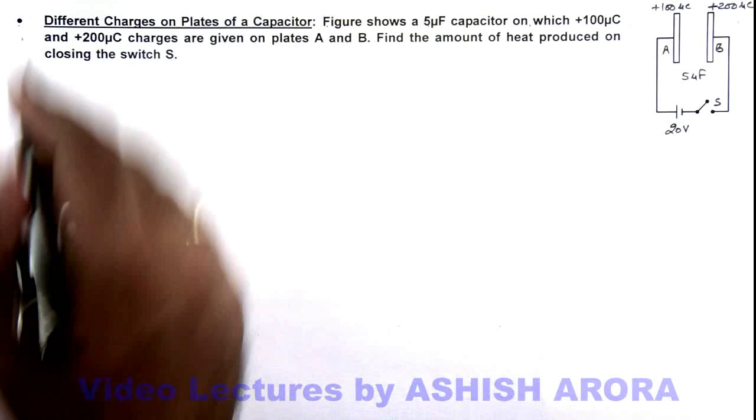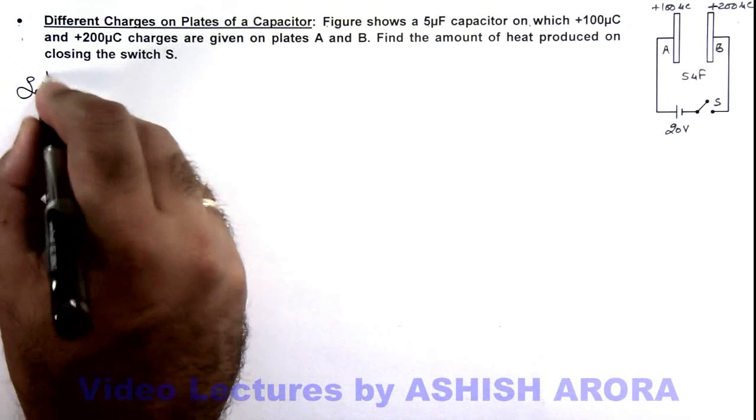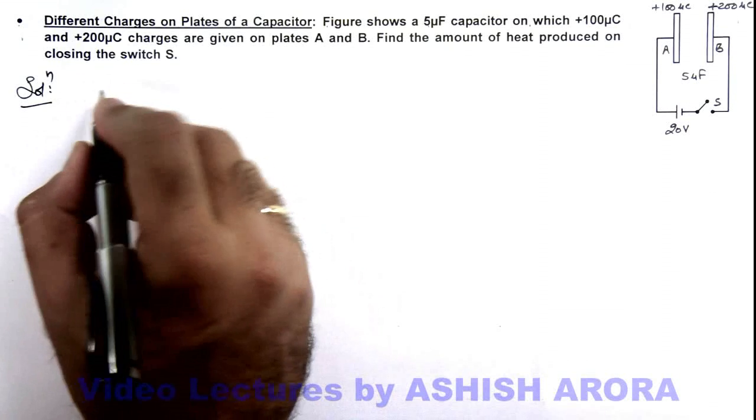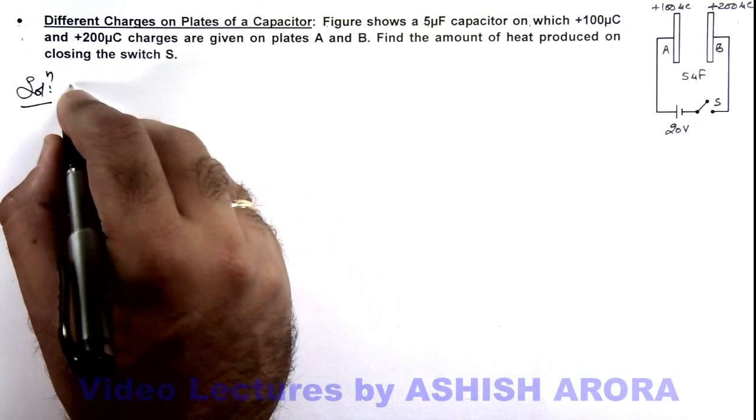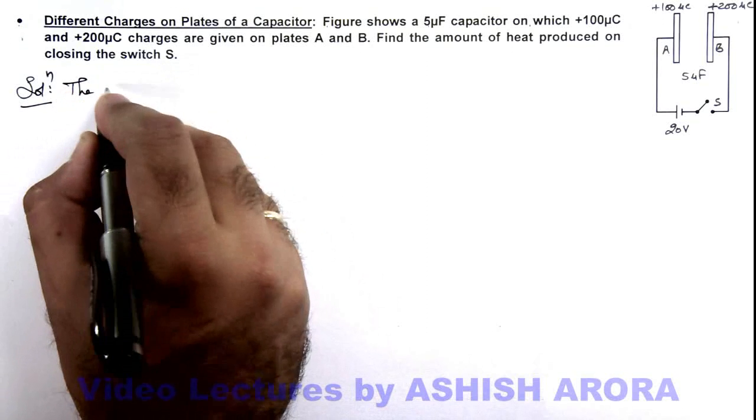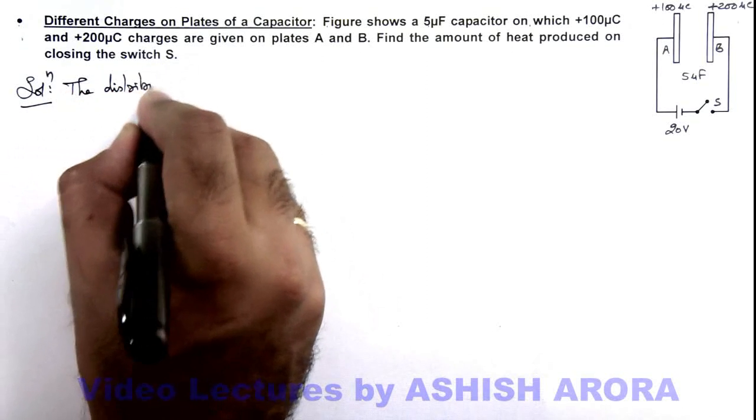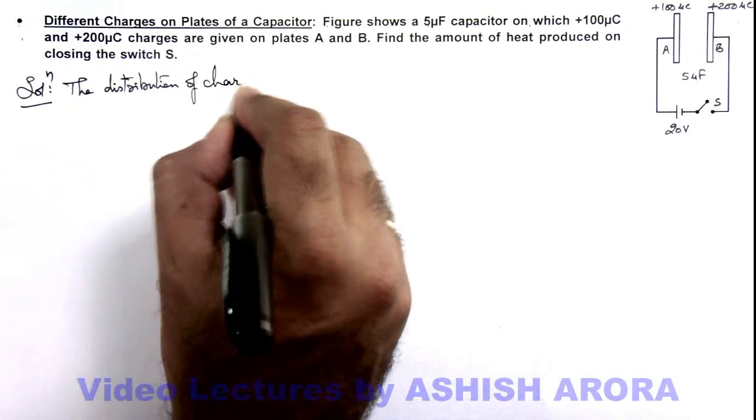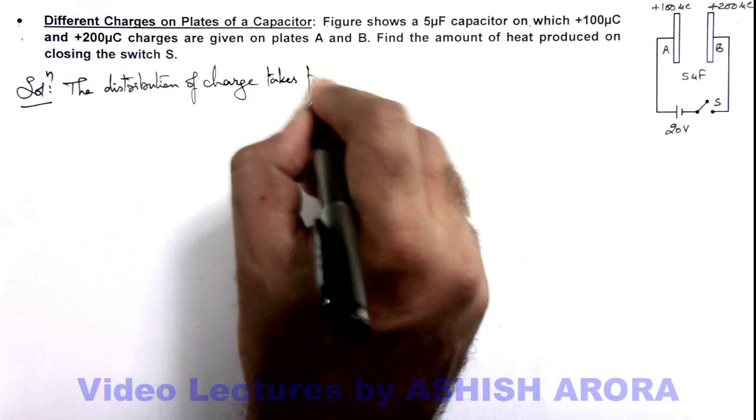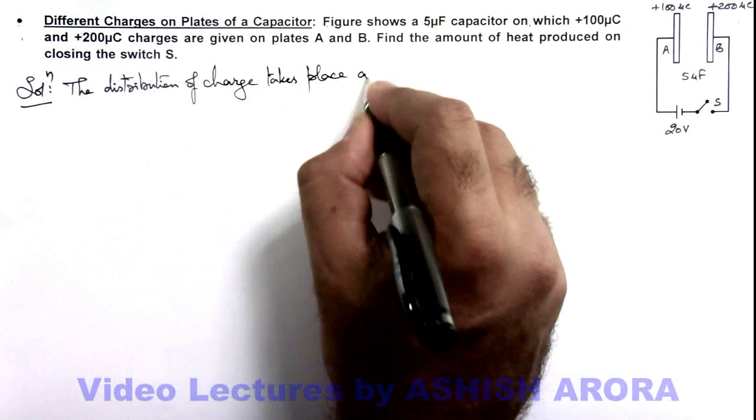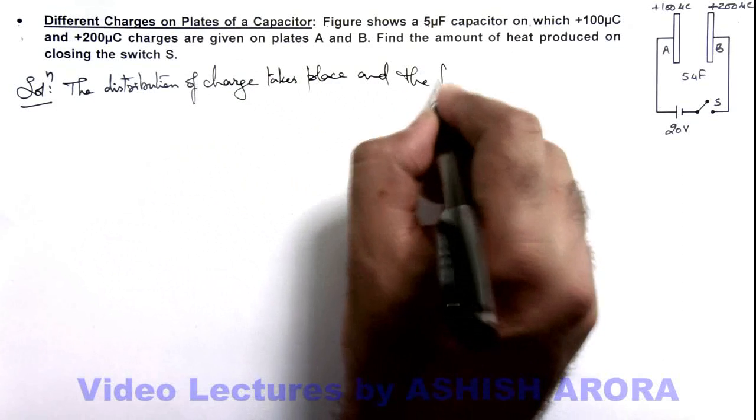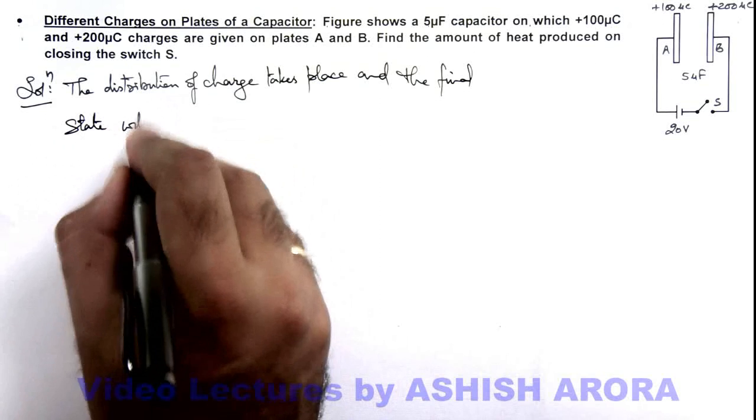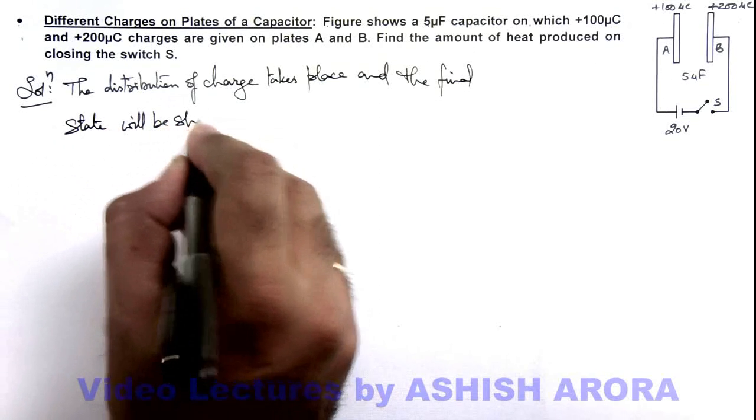So here, first we calculate the distribution of charge on the two plates of the capacitor when the switch is open. Here we can write the distribution of charge takes place, and the final state will be shown as follows.